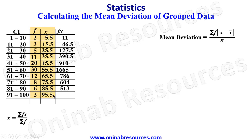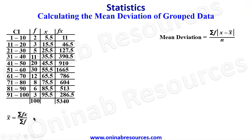And finally 3 times 95.5 gives 286.5. Adding all the frequencies gives 100, and summing all fx values gives 5340. Substituting into the mean formula: 5340 divided by 100 gives us 53.4, which is the mean of this distribution.